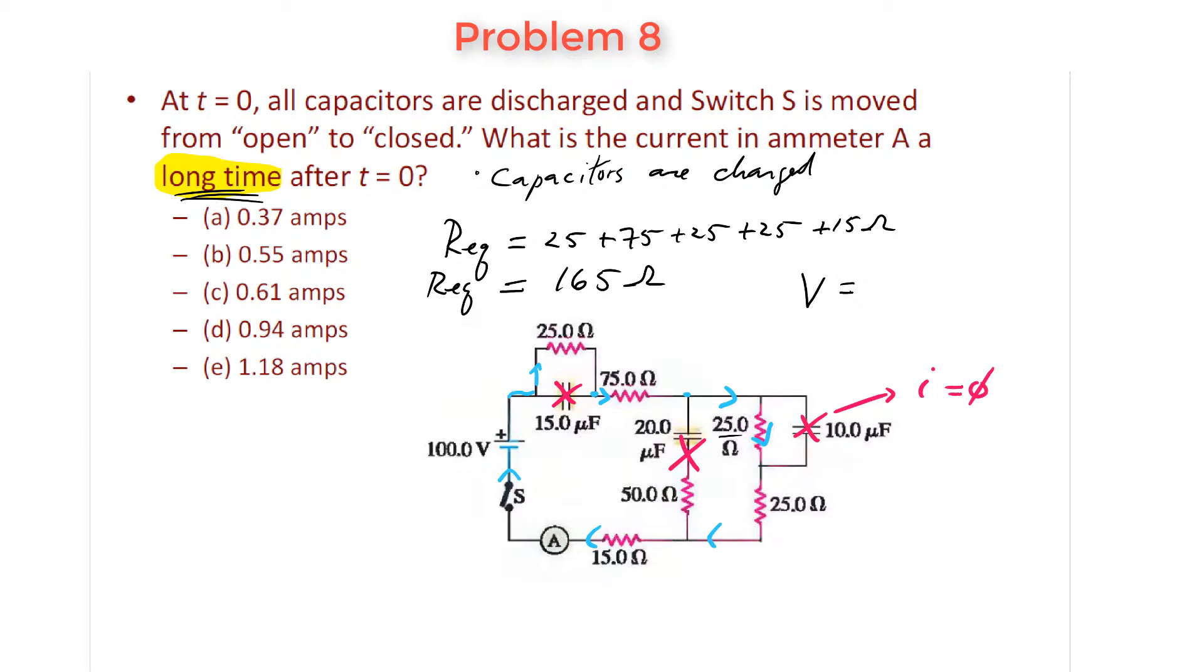So, voltage is 100, my equivalent resistor is 165. I should be able to find the current flowing through there. Just do it down here at the bottom. The current is simply 100 divided by 165. My current is 0.61 ampere. Choice C is the correct answer.